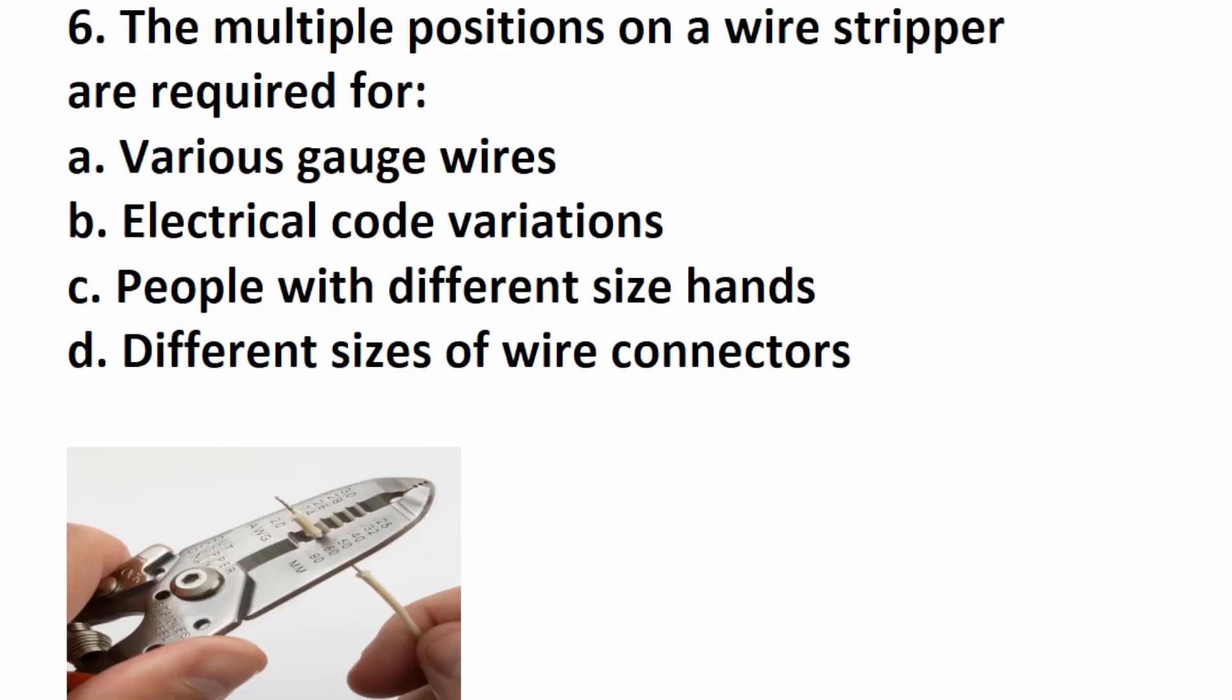Number six says, the multiple positions on a wire stripper are required for. Here is a wire stripper. Over here, you can see this phrase AWG. What do you think AWG stands for? It stands for American Wire Gauge. It's the various gauge wires that you would use these wire strippers for. So this one is A, various wire gauges. Remember AWG, American Wire Gauge. That's the thickness of the wire.